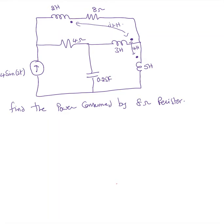Here is the next example. In this example, we are asked to find the power consumed in the 8-ohm resistor, which is right here. The first thing I noticed is that the given circuit is in the time domain, so we need to convert the time domain into the frequency domain. Another thing I noticed is that there is a current source.